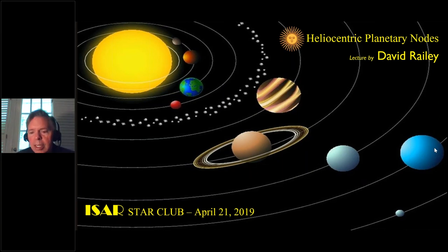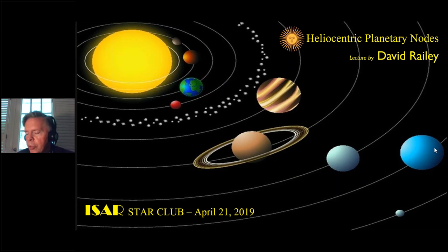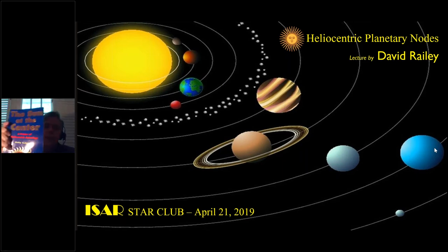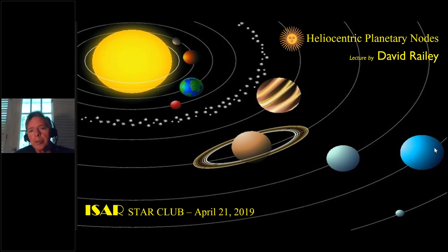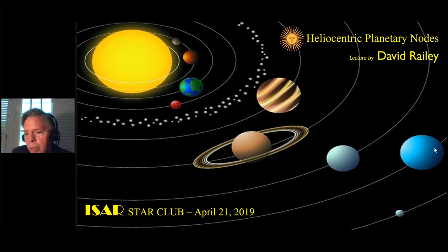I got interested in the heliocentric nodes of the planets back in the early 80s, around 1981 or 82, under the influence of Philip Sedgwick, who has been an astrologer for a long time and also wrote a book about heliocentric astrology. I have his 1990 book here. He wrote a book on heliocentric astrology called The Sun at the Center, originally published in 1990. In the 80s, Philip was using the heliocentric nodes as key points of interpretation in a chart and also for mundane events.